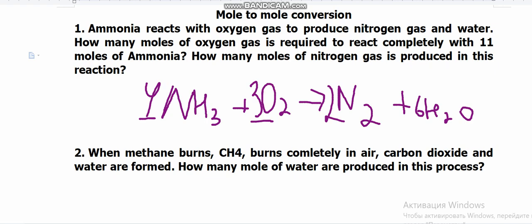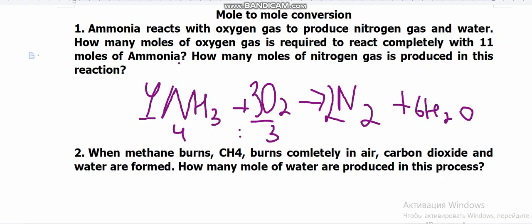This ratio never changes. If we increase the amount of one reactant, we must increase the products and the other reactant proportionally. The ratio of 4 to 3 in the reactant part never changes. If you double the ammonia from 4 to 8, you must make oxygen 6. If we decrease ammonia to 2 moles, we must decrease oxygen to 1.5 moles — the ratio never changes.